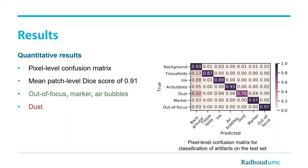From a visual perspective, these three artifact types have the largest difference in appearance compared to regular tissue. Furthermore, dust performed the worst in both pixel-level classification and patch-level evaluation. We think that the relatively lower accuracy on dust artifacts was mostly due to the difficulty of annotating the borders of the artifact. Because of the transparent gradient at the border of dust artifacts, it can sometimes be hard to set a threshold on where dust starts to change into background.